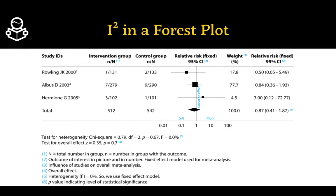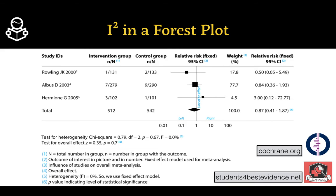Let's look at two examples. The first is a fictitious example from the Cochrane website, based on a blog for students on Best Evidence — a fantastic resource for evidence-based medicine. In this forest plot, you can see the I-squared is prominently displayed, showing zero percent heterogeneity. Because of that, a fixed effects model was chosen, since there was no heterogeneity to control for.